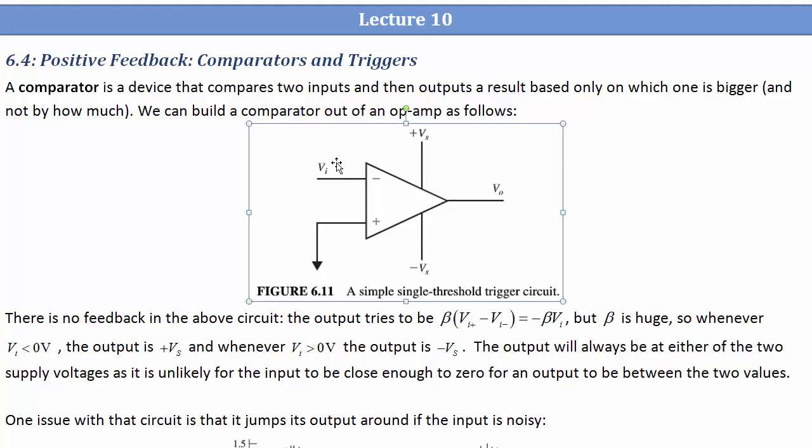This is a circuit that doesn't have any negative feedback in it, like the previous op-amp circuits we've dealt with. The output is just beta times the difference in the inputs, which, since we're pinning the positive one to ground, in this case is just negative beta vi.